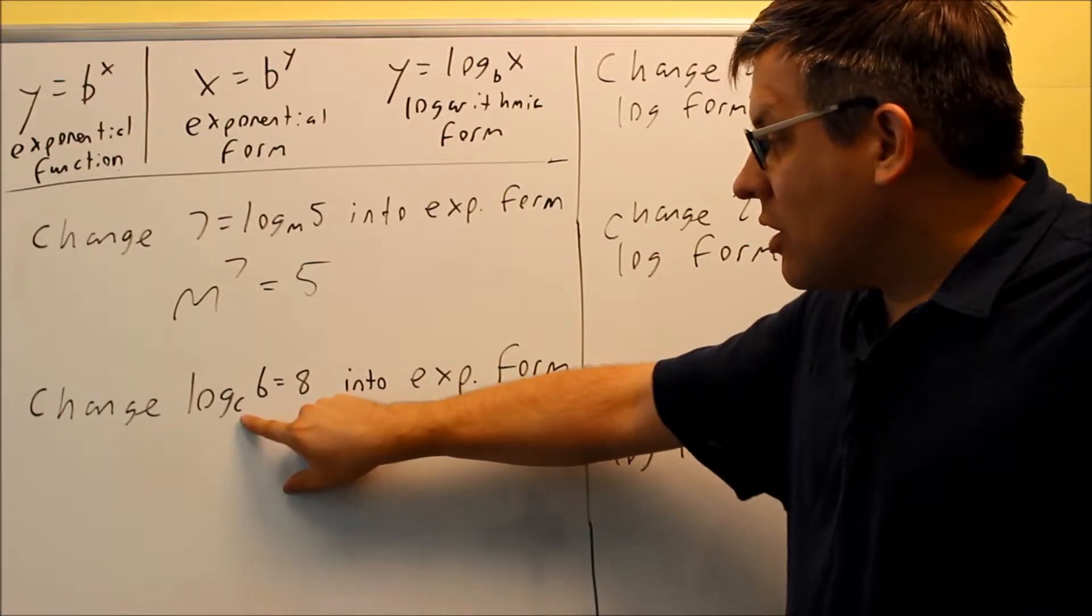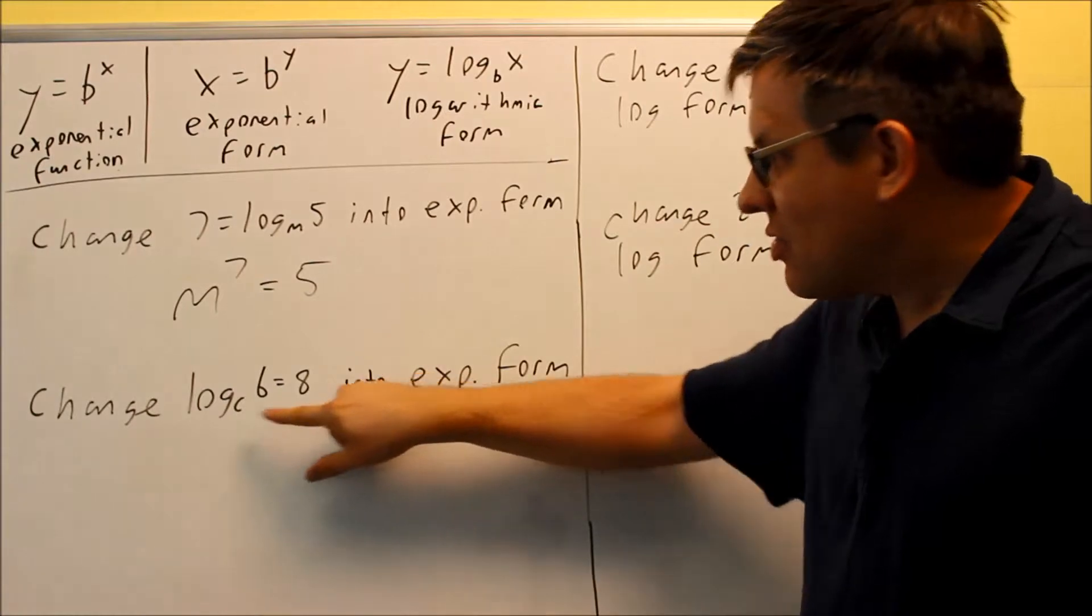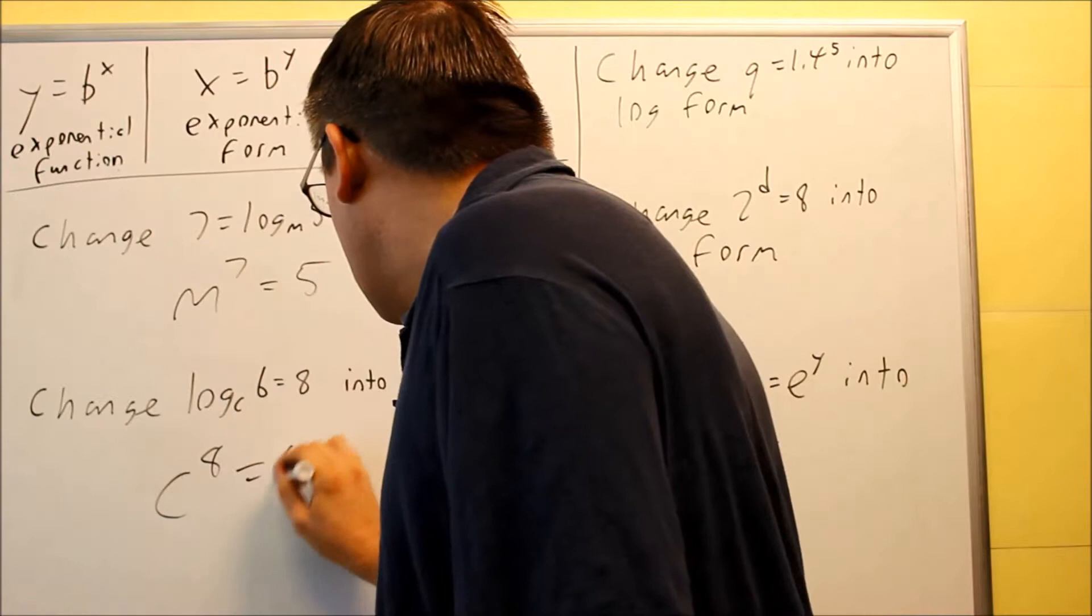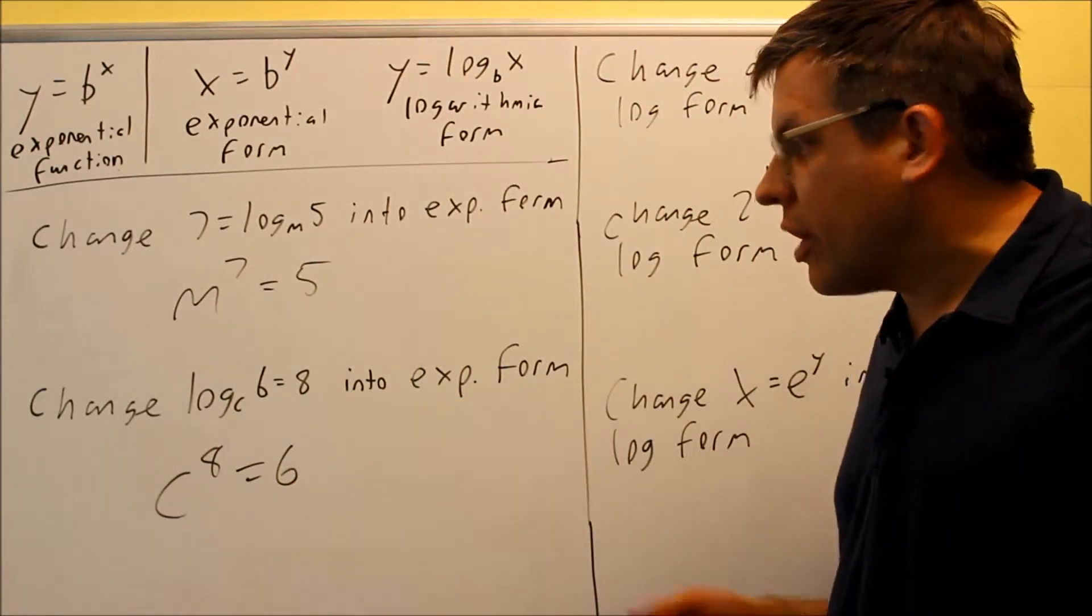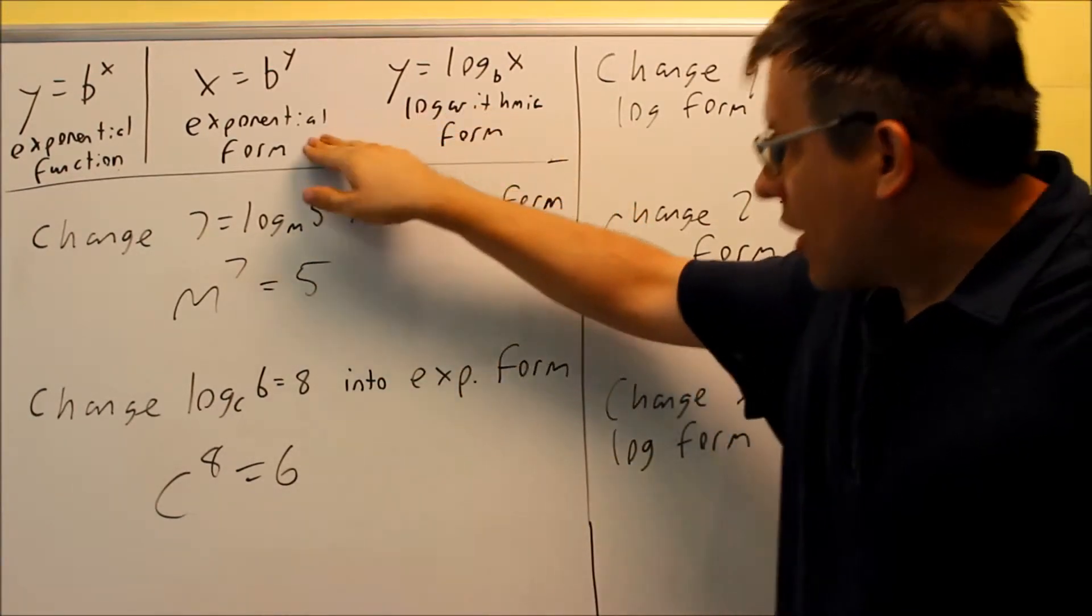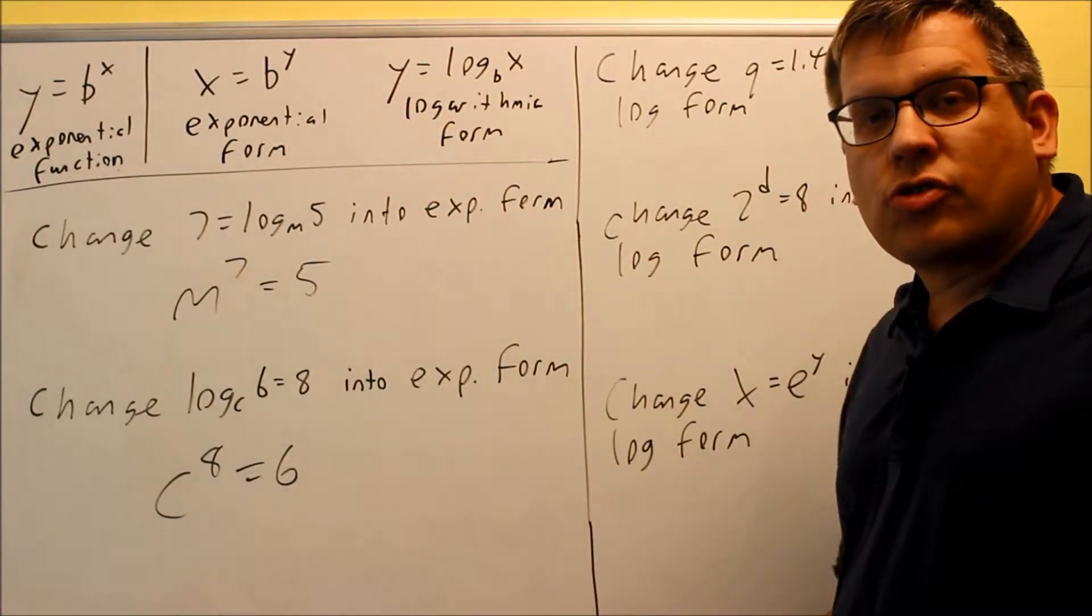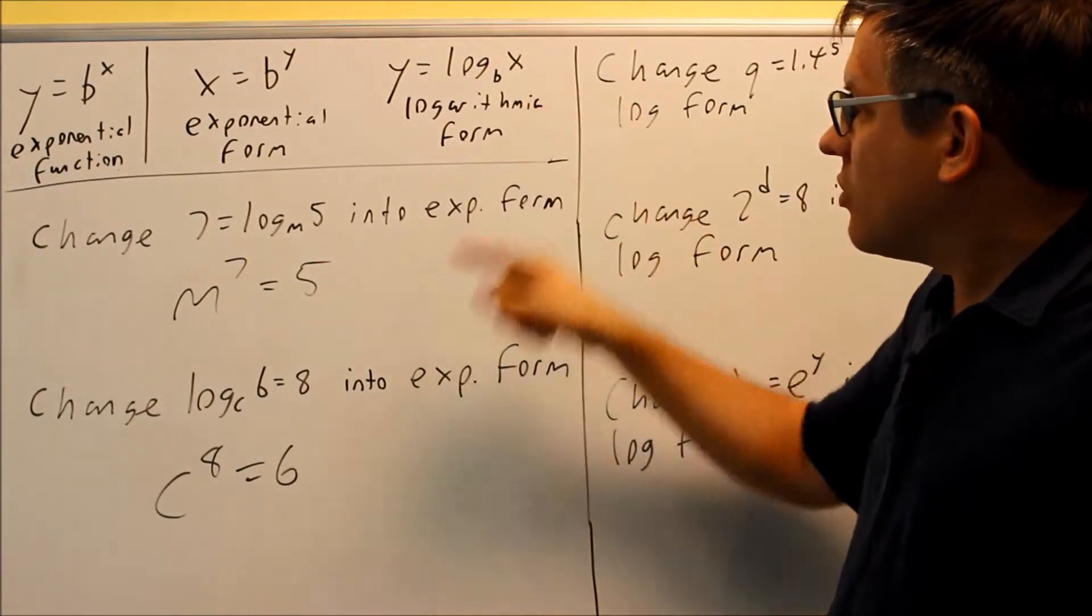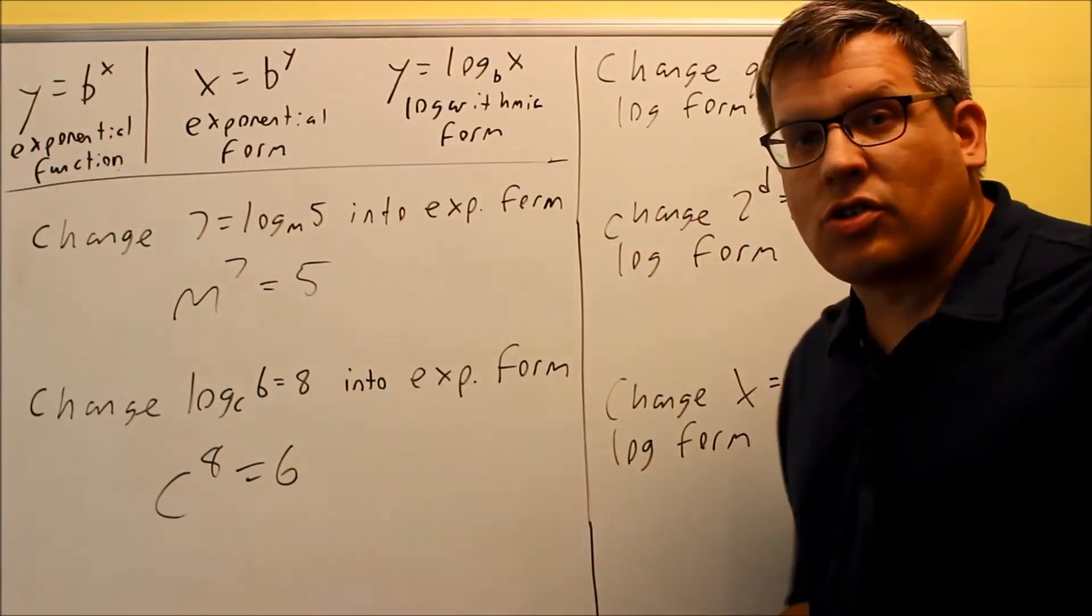This one, you're going to take the base, which is c, raise it to the number after the equal sign. c to the 8th is going to equal 6. So your answer would look like this. c to the 8th equals 6. And again, this one, you don't have to do any more either. You're not solving for it. All you're doing is going from the log form back over into exponential. Going this way is actually going to be very useful in future sessions because we want to get into solving equations. When we get into solving equations, it's a lot easier to solve it in exponential form than it's going to be in the log form, and that's why we want to change that over.